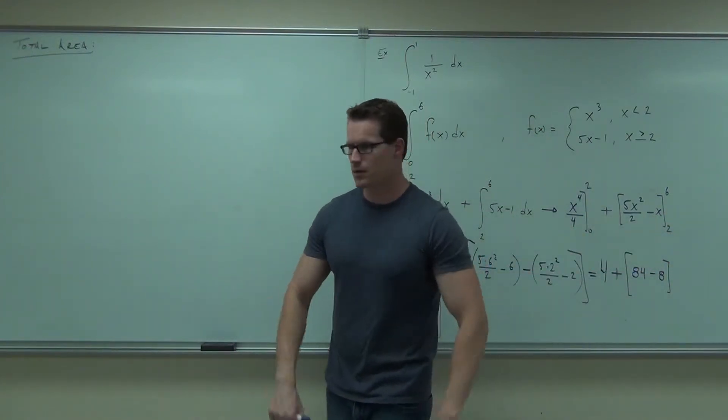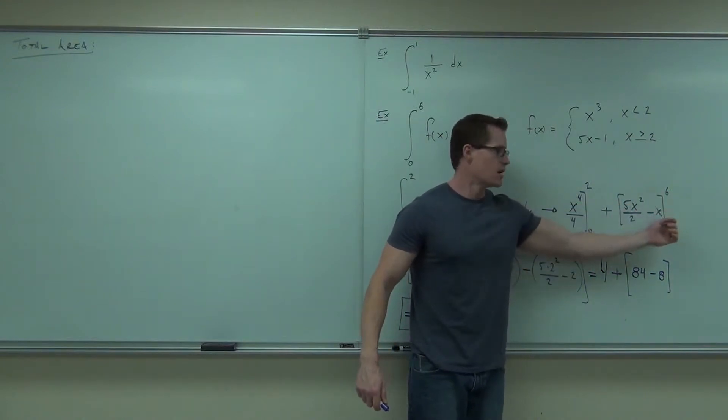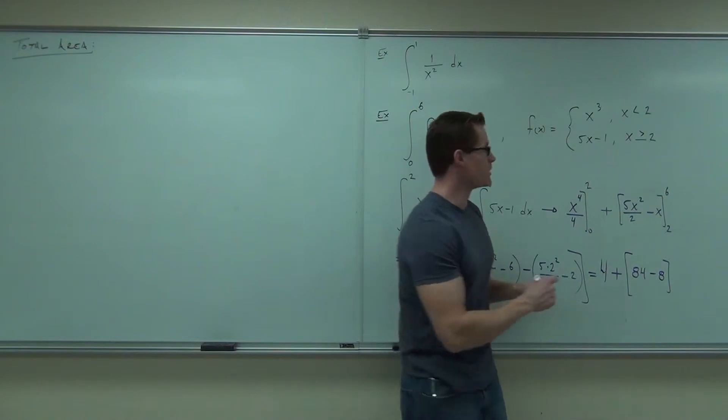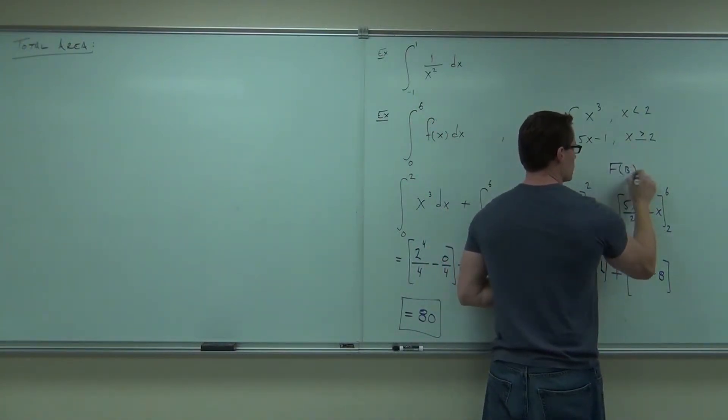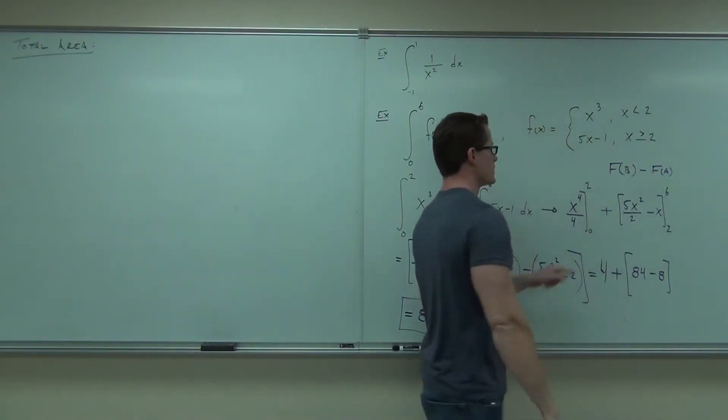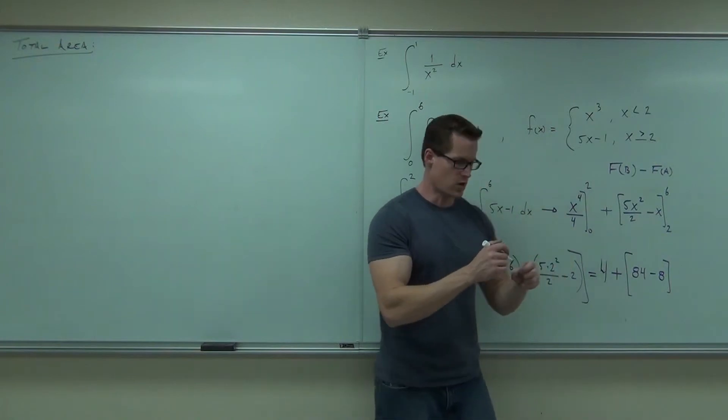You've got to plug them into everything. And for this instance, your x becomes 6 every place you see x. For this instance, your x becomes 2 wherever you see x, and then you subtract. And that's what this meant. f of b minus f of a. That's what that meant. You take your b, you plug it in. You take your a, you plug it in, and then you subtract it.